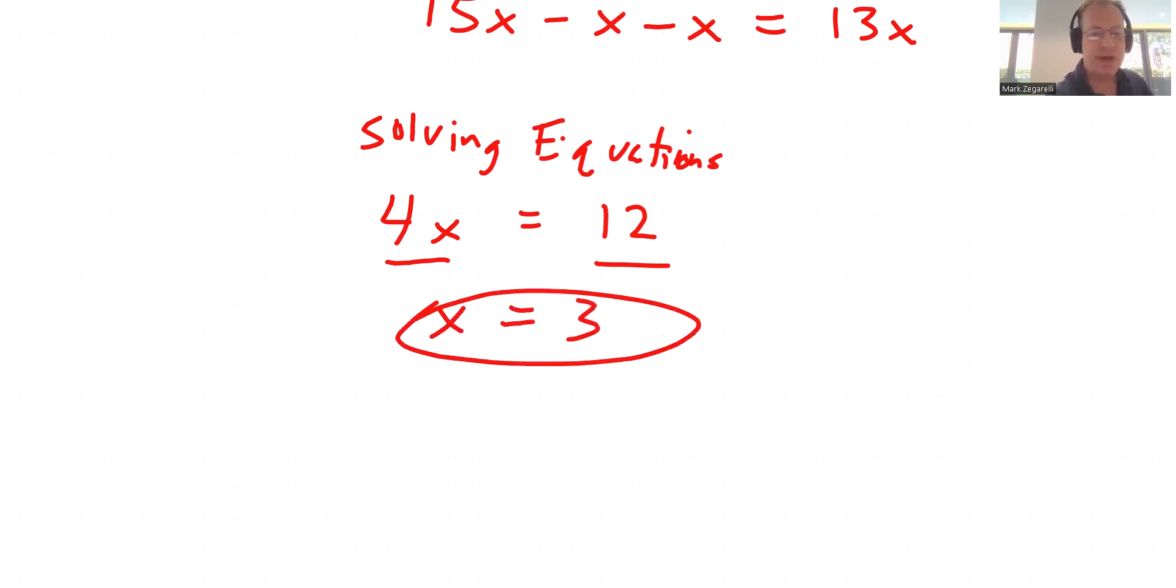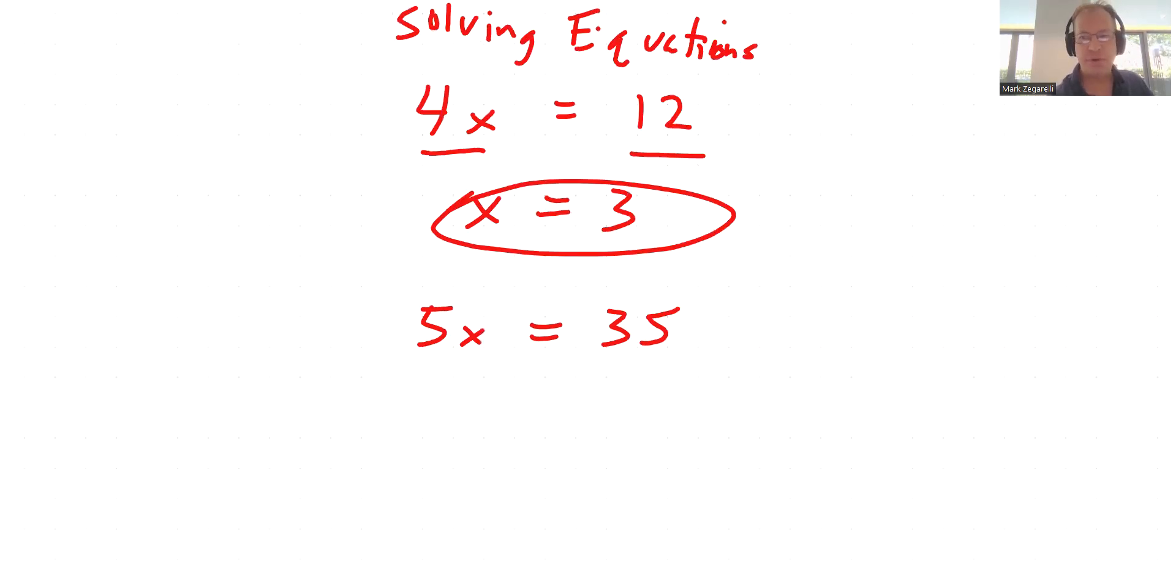How about 5x equals 35? 5 times something equals 35. x equals 7. 5 times 7 is 35, and that is the solve. We figured out what x is. That's how we solve an equation.